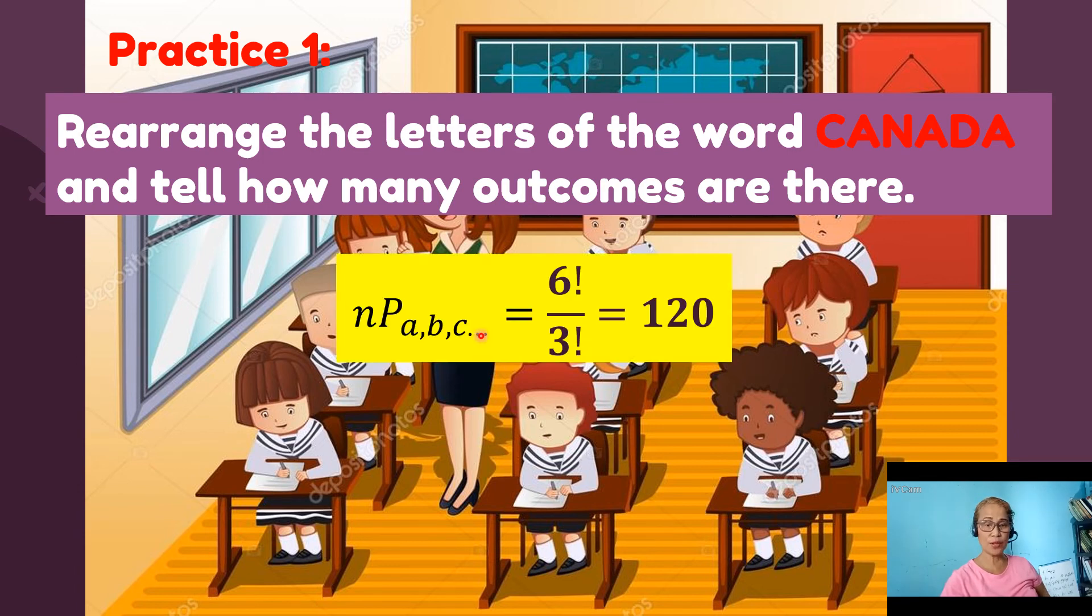Did you get 120? Because in the word CANADA, you have 6 objects to rearrange. So you have 6 factorial and you divide it by 3 factorial because the letter A appears thrice. So 6 factorial divided by 3 factorial is equal to 120.